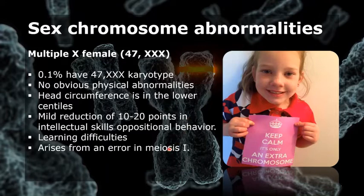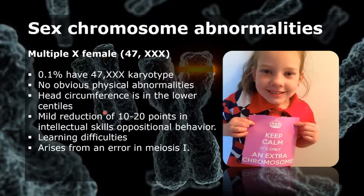Studies have shown that the additional X chromosome is of maternal origin and arises from an error in meiosis one. Adults are usually fertile and have children with normal karyotypes. For females with multiple X chromosomes beyond 47 XXX, there is a high incidence of learning difficulties, with severity directly related to the number of extra chromosomes.